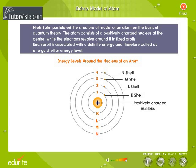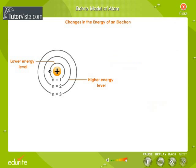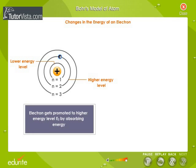As long as an electron remains in an energy level, it does not radiate energy. An electron gets promoted to a higher level by absorbing a quantum of energy.